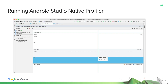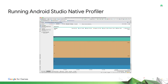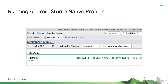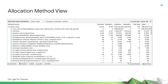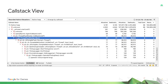Running the native memory profiler is similar to other profiling tools in Android Studio. From the memory profiling menu, click on the memory trace. From the memory trace view, click on Record Native Allocations. When you stop the recording, you can see the results. This view shows the methods that called allocation functions, along with how much memory was allocated and deallocated. The call stack view shows the call stack allocations and deallocations.